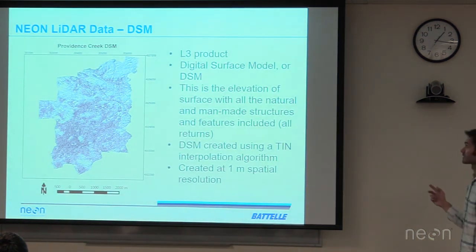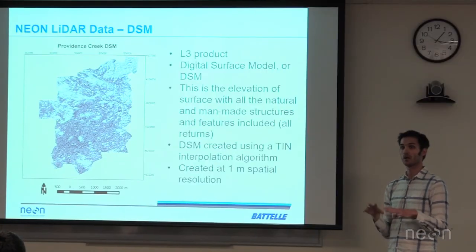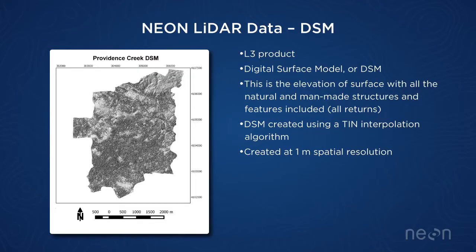The digital surface model is one of our L3 raster products. We use the triangular irregular network interpolation algorithm with all of the points — vegetation, buildings, everything included — interpolating between all those and getting the raster elevation at one meter spatial resolution.